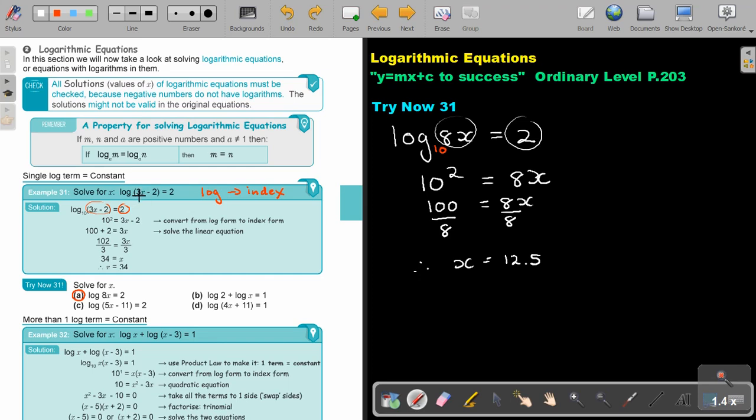And if you substitute 12.5, it will be working out, giving you a positive there. Let's move on.